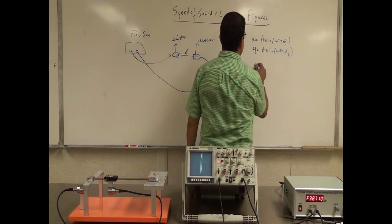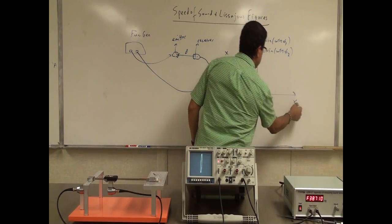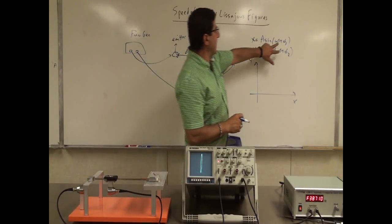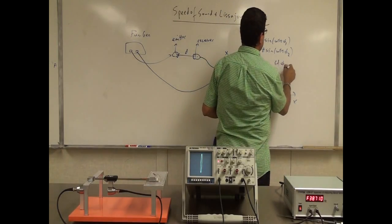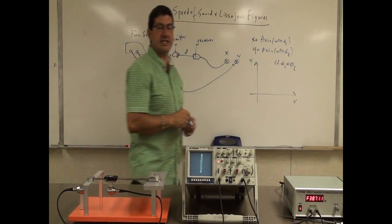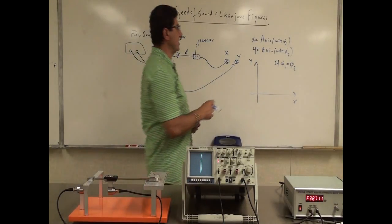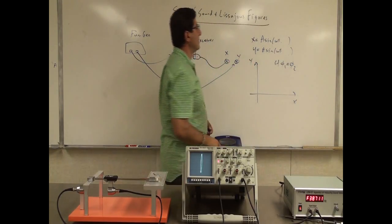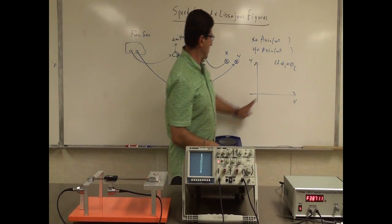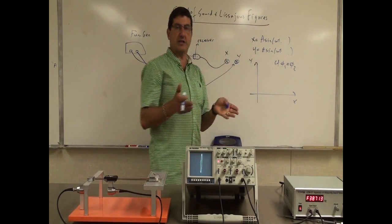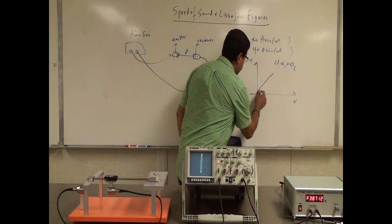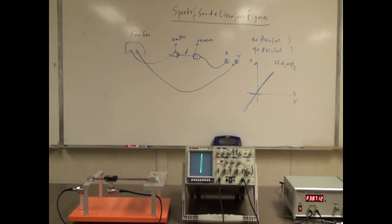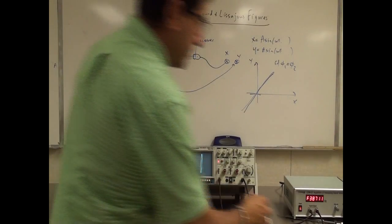If I plot Y versus X on the oscilloscope, what kind of graph do we get? If phi_1 equals phi_2, the two waves are in exact same phase. That's like saying both phases are zero, so Y and X are directly equal to each other — you get a straight-line Lissajous figure. I can adjust the distance between the receiver and emitter to observe this.